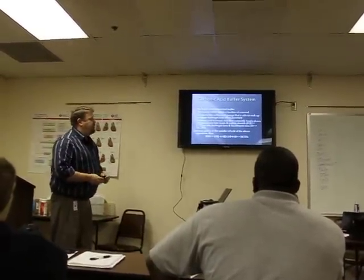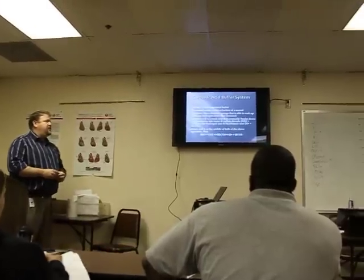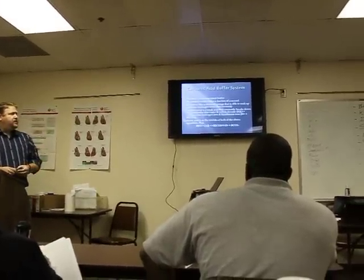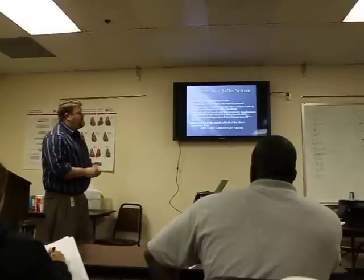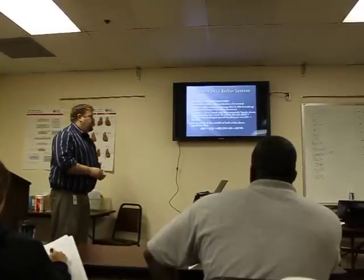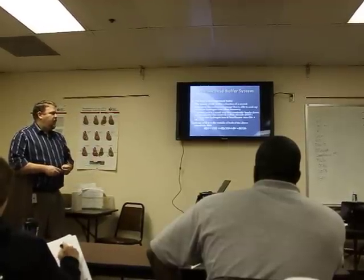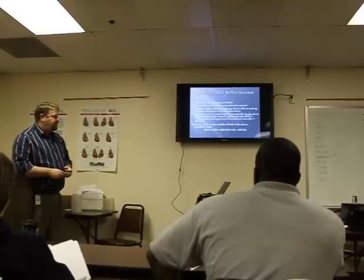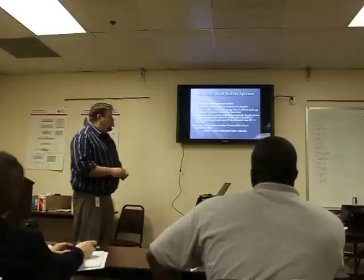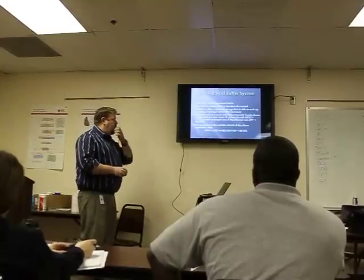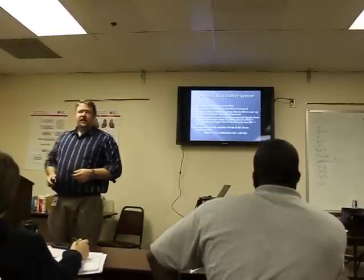The carbonic acid buffer system is the body's most important buffer, and it is the fastest, working within a fraction of a second. A buffer is like a chemical sponge that will soak up or release hydrogen ions when necessary. Carbonic acid is considered a weak acid that constantly breaks down and transforms into water and carbon dioxide, or into hydrogen ions and bicarbonate ions. Carbonic acid is in the middle of both of those equations.